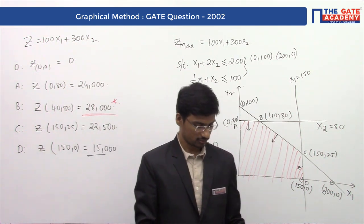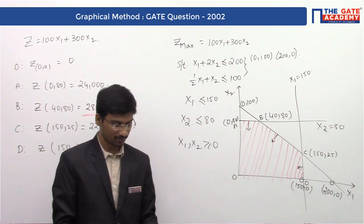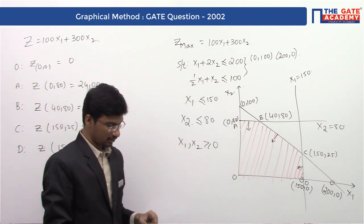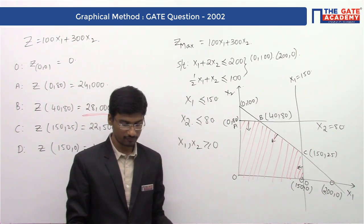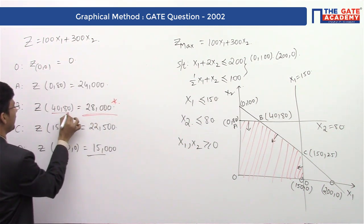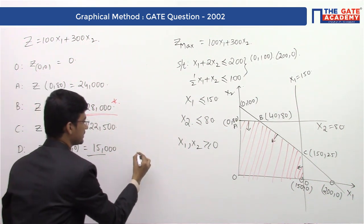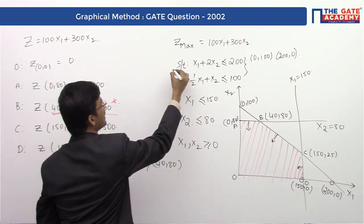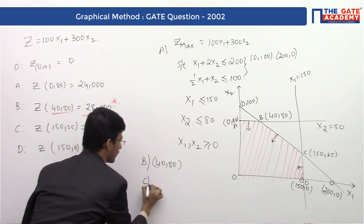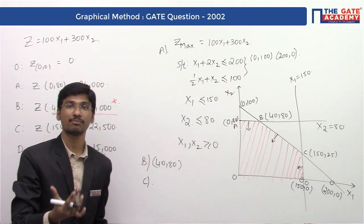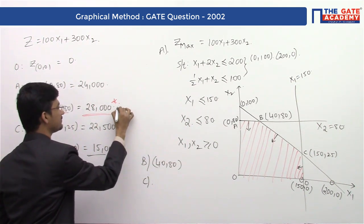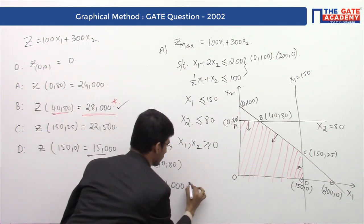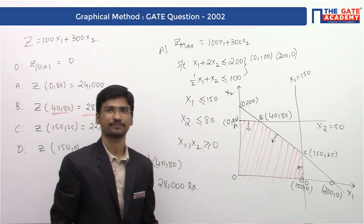Coming to the questions: question (a) — set up the problem as a linear programming problem — we have found the LP formulation from the given data. Question (b) — determine the optimal mix for maximizing the profit — the optimal mix is x1 = 40, x2 = 80. Question (c) — what is the maximum profit — at this point we get the maximum profit which is 28,000 rupees.